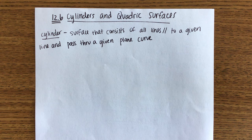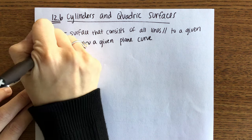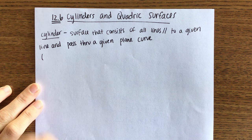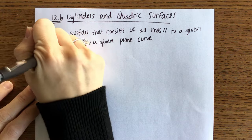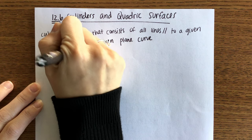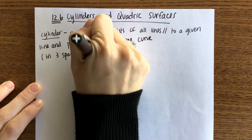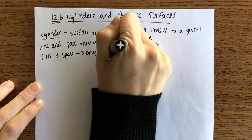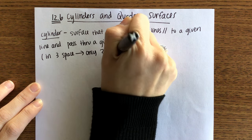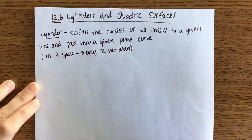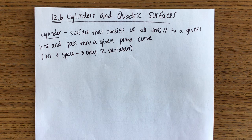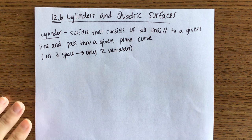I know that doesn't make a whole lot of sense, so I will tell you in simpler terms what that means to us. What that means to us is that when we are in three-space, the equation of a cylinder has only two different variables. So a cylinder to us in three-space is any equation that has two variables rather than three.